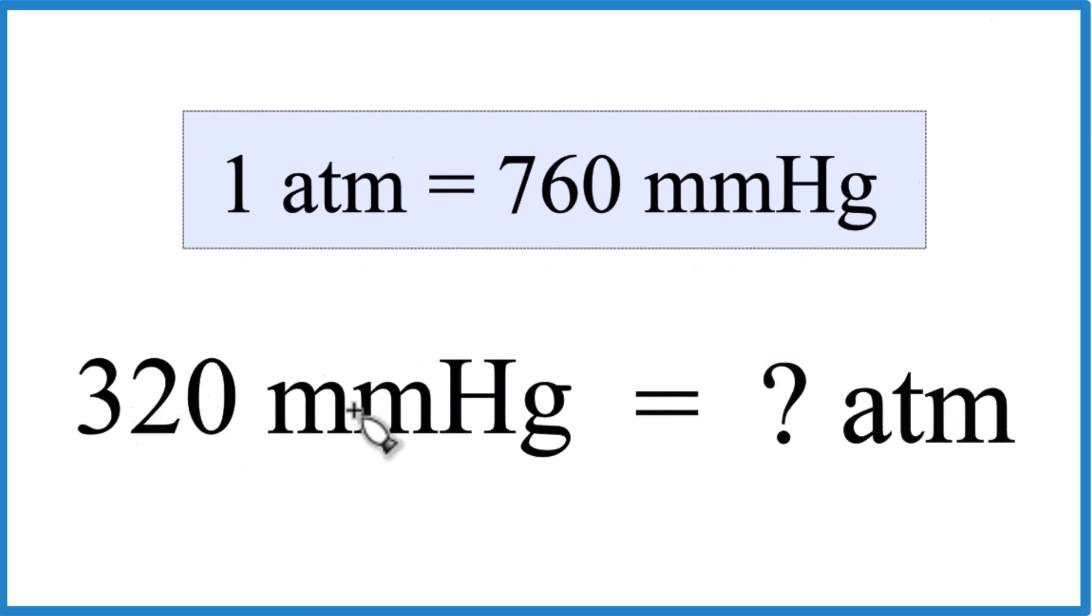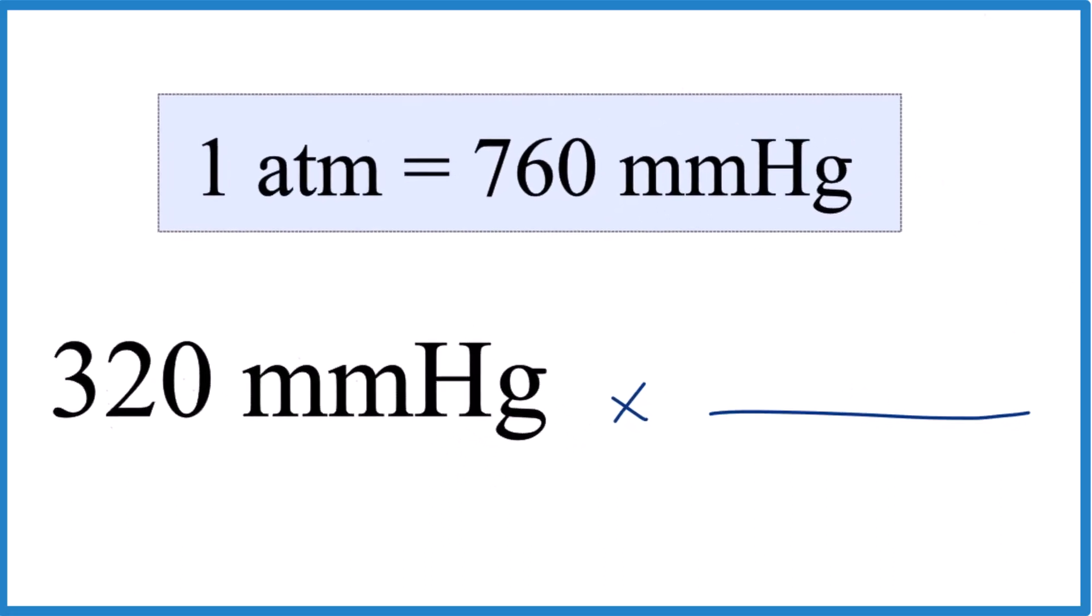So we're going to take 320 millimeters of mercury, multiply it by our conversion factor. We want to cancel out the millimeters of mercury here, so let's put the 760 millimeters of mercury on the bottom. That way we'll cancel this out and our one atmosphere, since we want to end up with atmospheres, that goes on the top.